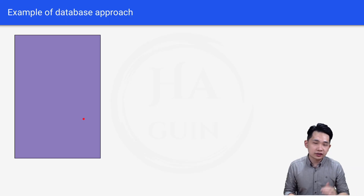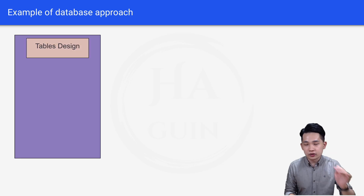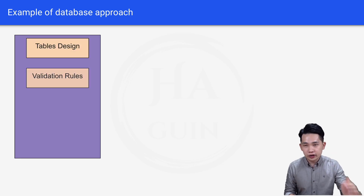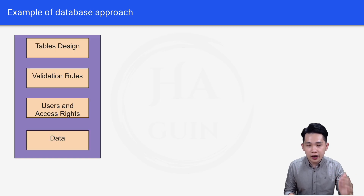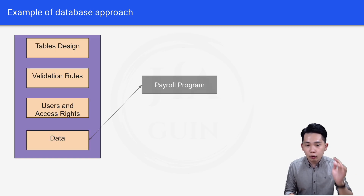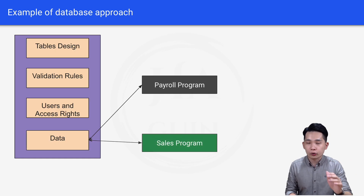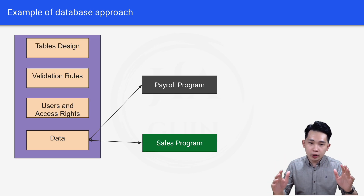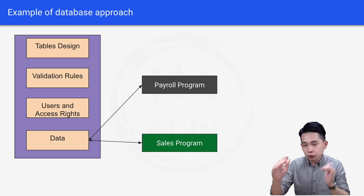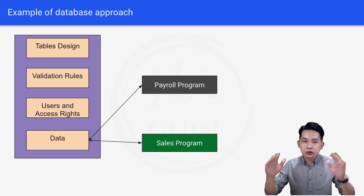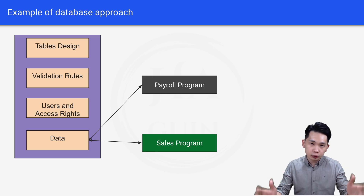Here is an example of the database approach. Inside the database we have table design, validation rules, users and access rights, and finally the data itself. This data can be shared and read by both the payroll program and the sales program, compared to the file-based approach where both programs had to read two different files.